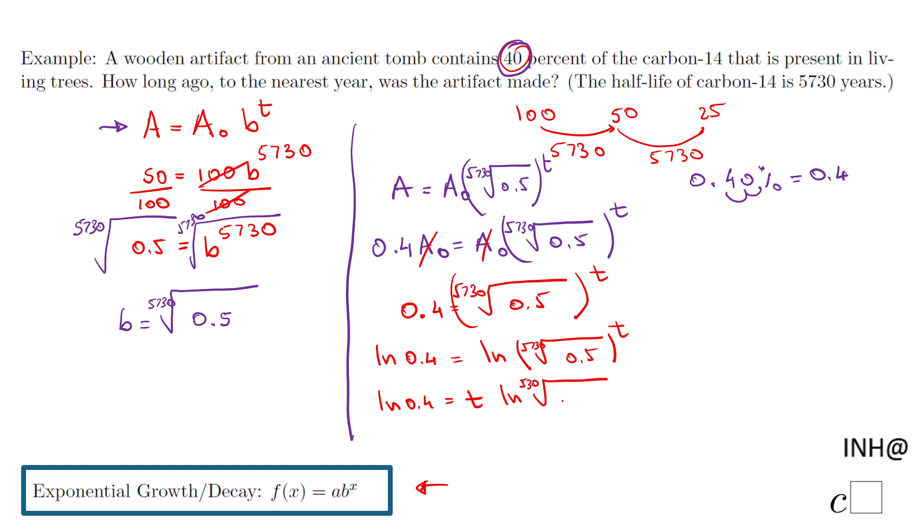The best way to treat this one is to look at this last part, the natural log. We can write that radical as a rational exponent - that will be the 1/5730 form.